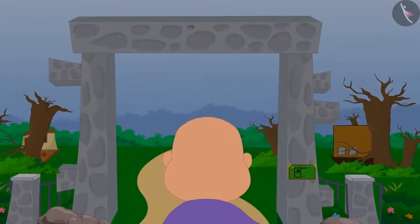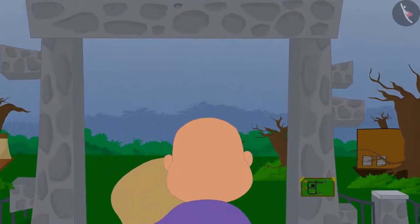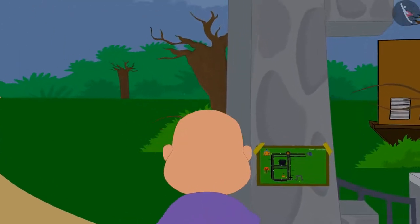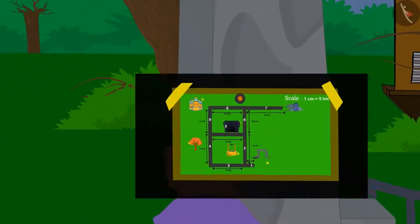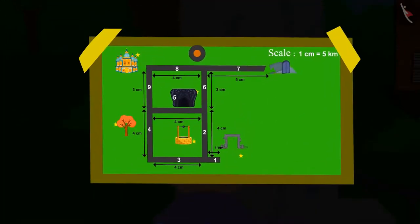One day, Bablu reached the village of Ulta Pulta. As soon as he reached the gate to go inside, he found a map which was upside down.